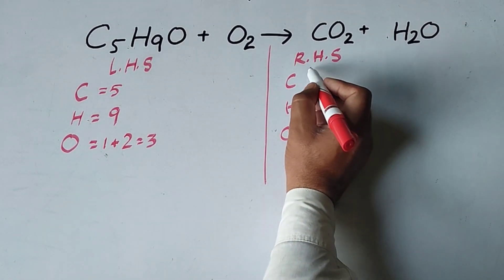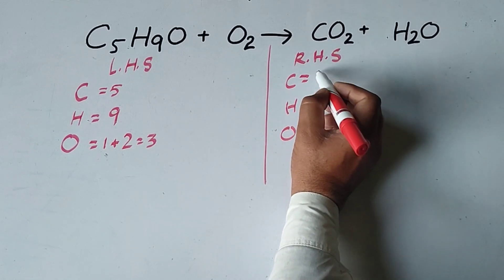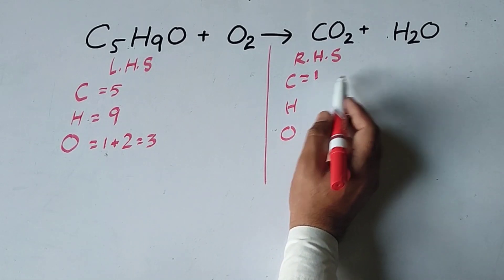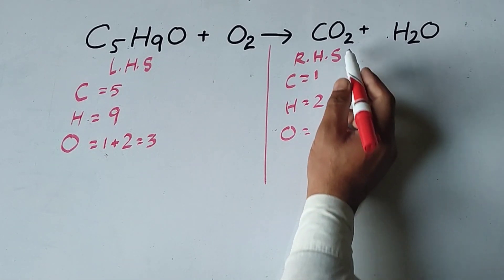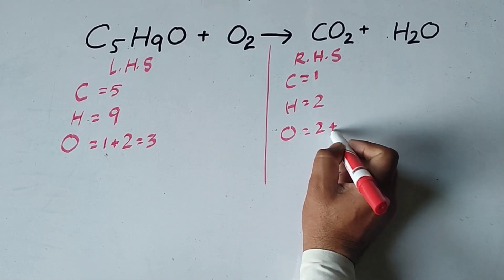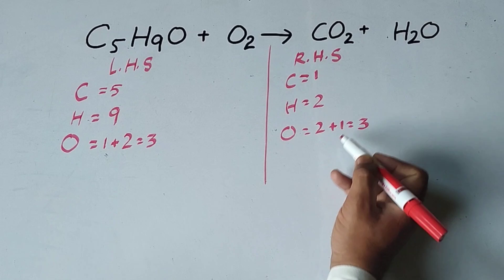On the product side, the number of carbon atoms is 1, hydrogen atoms 2, oxygen atoms 2 plus 1, total 3 oxygen atoms.